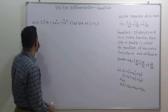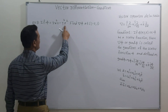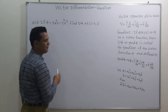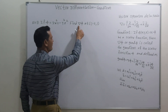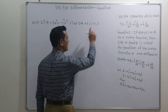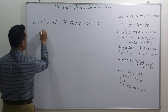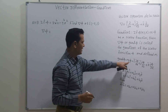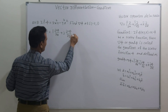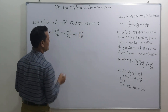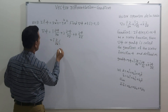Let's take the first example. If φ equals 3x²y minus y³z², find the value of del φ — that is, the gradient of the scalar point function φ — at the point (1, -2, 1). After finding del φ, we substitute x=1, y=-2, z=1. Our aim is to find del φ using its definition: del φ equals i times the partial derivative of φ with respect to x, plus j times the partial derivative with respect to y, plus k times the partial derivative with respect to z. We now substitute the value of φ.